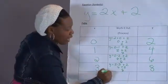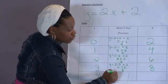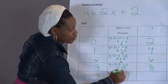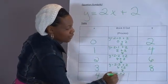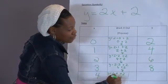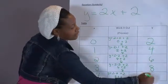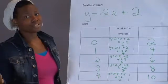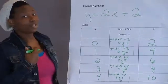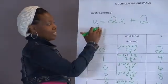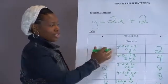And then lastly, y equals 2 times 4 plus 2. 2 times 4 is 8. 8 plus 2 is 10. Now, I could have used different numbers, but I decided I wanted to use 0 through 4. So here's my equation. My table for the equation will look something like this. So remember, we're looking at the equation y equals 2x plus 2. We can represent it in multiple ways. We just completed the table for it.